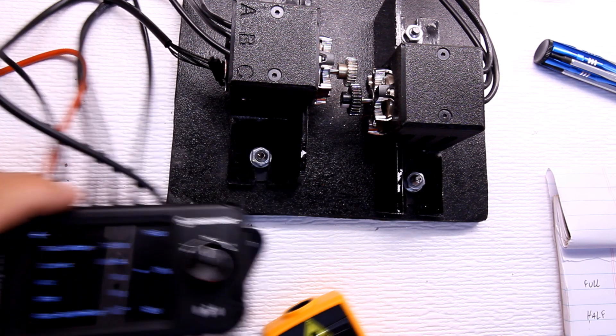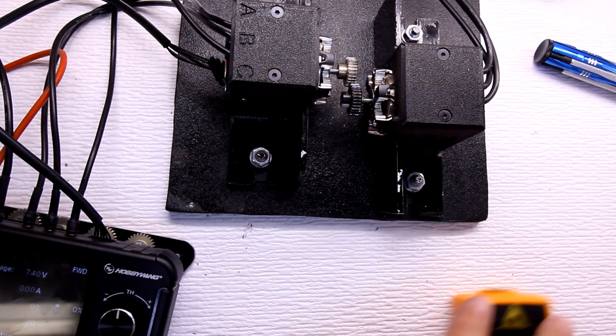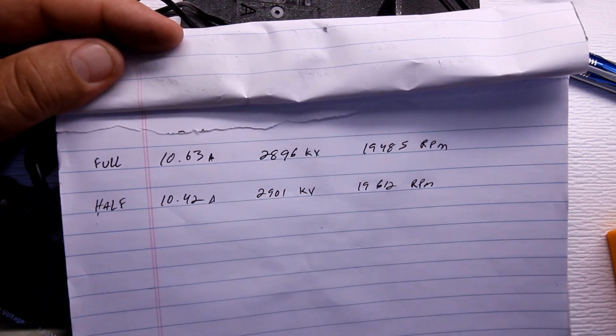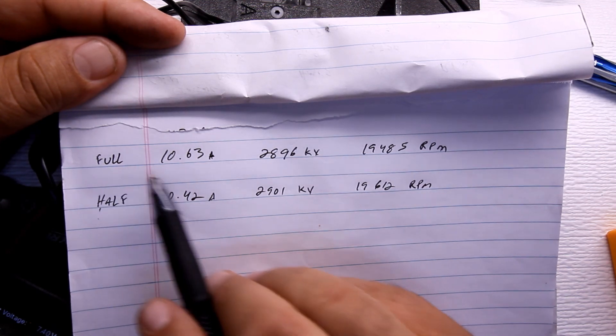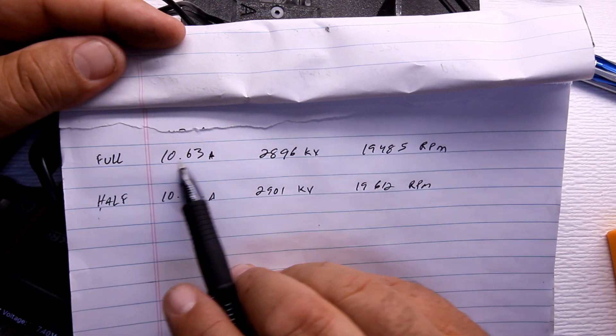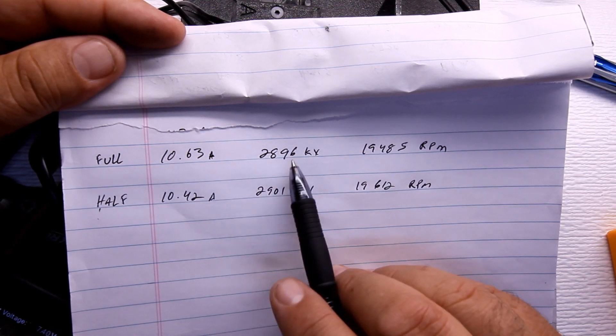Okay, let's look at the total numbers. The numbers are in. First run at full contact: 10.63 amps, 28.96 kV, 19,485 RPMs.